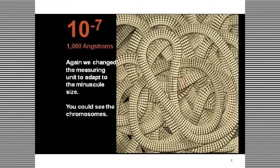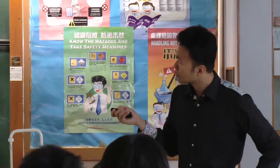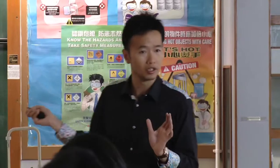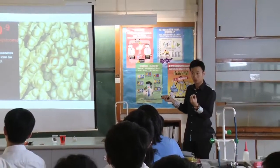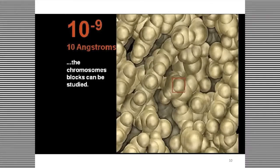We're not yet at nanometers — we need to get to the nanoscale. At 100 angstroms, we're talking about a 10-nanometer scale. Now we're seeing double-strand DNA quite clearly. At 10 angstroms, which is one nanometer, you can actually see the atoms — the building blocks.